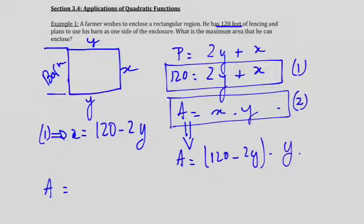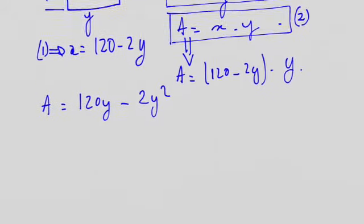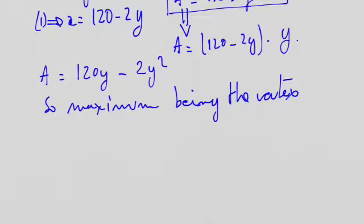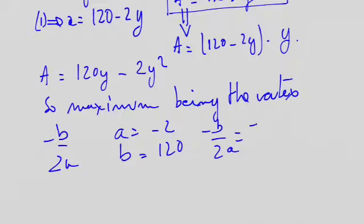That defines a equals to 120y minus 2y squared. So, the maximum being the vertex, I can calculate minus b divided by 2a with a equal negative 2 and b equal 120. So far, I'm getting negative b over 2a equal to minus 120 divided by negative 4, which is 30.